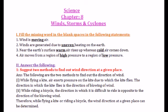Fill in the blanks: The wind is moving air — moving air is called wind. The winds are generated due to unequal heating of the earth. Near the earth's surface, warm air rises up whereas cold air comes down.